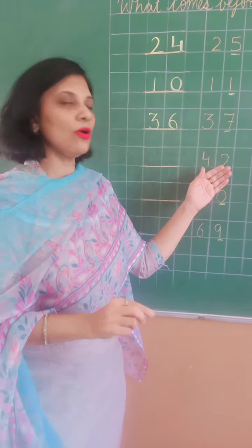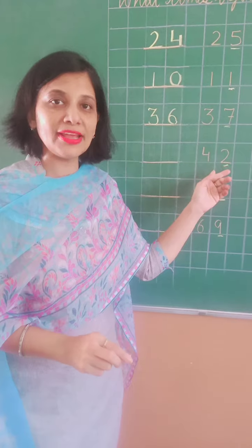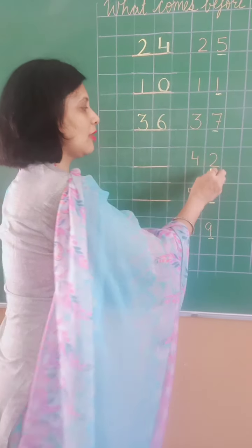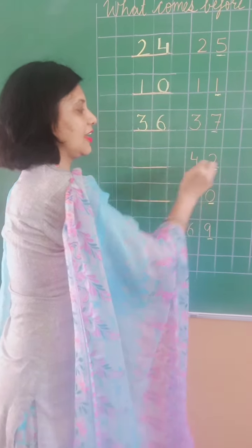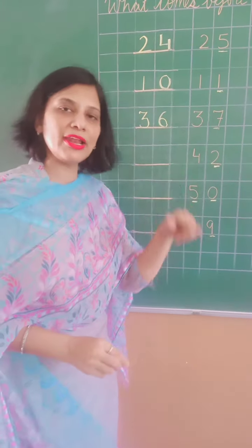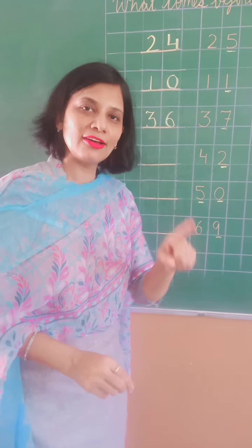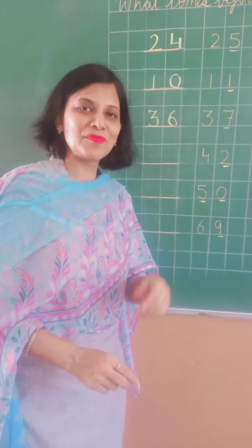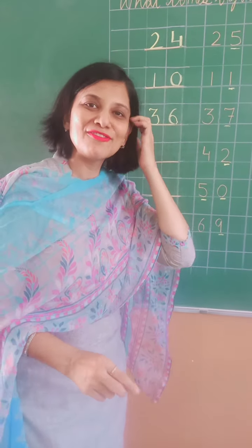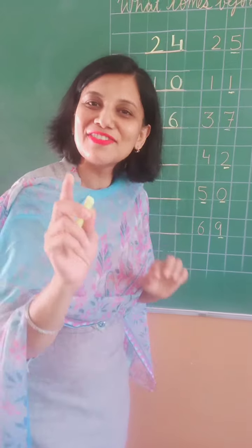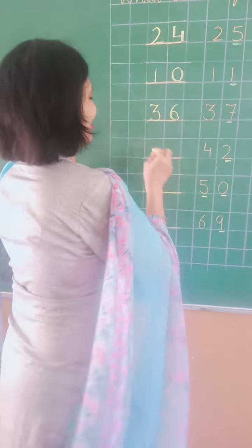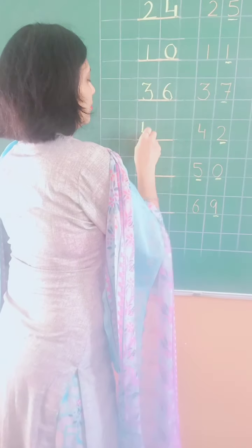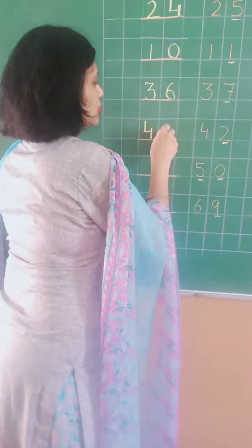Now the next number is 42. 42 ka first digit dekhenge — 2 se pehle kya aata hai? 1. 42 se pehle kya aata hai? 41. Concept samajhna hai aapne. The answer is 41.